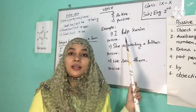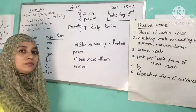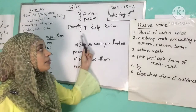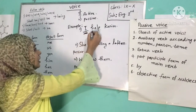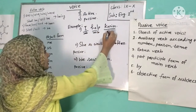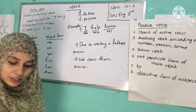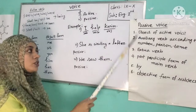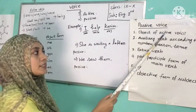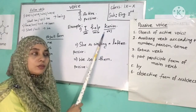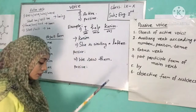Let's work out some examples. First example: 'I help Corin.' In this sentence, 'I' is the subject, 'help' is the verb, and 'Corin' is the object. Following our sequence, step one: we use the object of the active voice, which is 'Corin'.